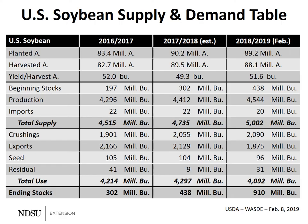This is the Supply and Demand Table for U.S. Soybeans prepared by USDA. We'll be focusing in on the values in the far right-hand column that represent the 2018-19 marketing year and the February updated numbers. We'll be comparing that column to the middle column, which represents the 2017-18 marketing year, which was last year, as well as the 2016-17 marketing year, which was two years ago.